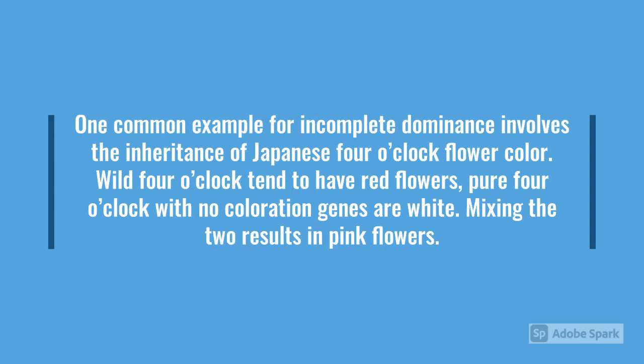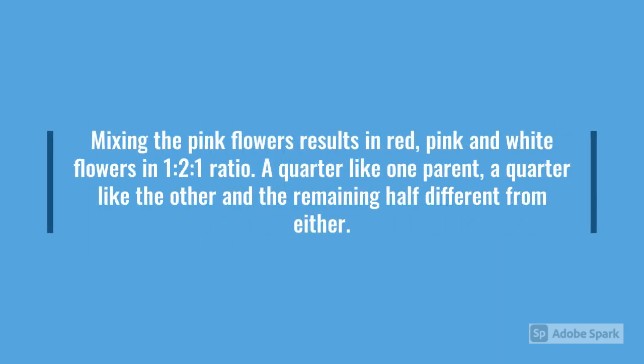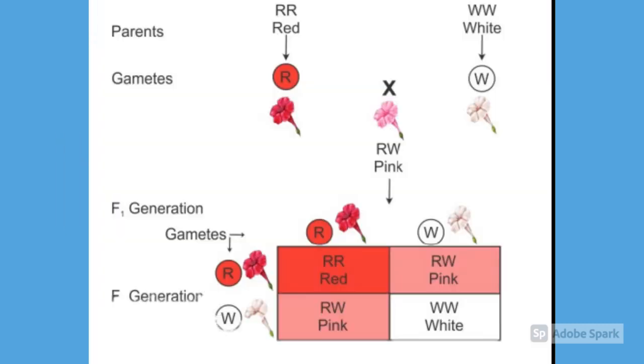One common example of incomplete dominance involves the inheritance of Japanese 4 o'clock flower color. Wild type flowers tend to have red flowers, while pure flowers with no coloration genes are white. Mixing the two results in pink flowers. Mixing the pink flowers results in red, pink, and white flowers in a 1:2:1 ratio. This figure shows the P and F1 colorations of Japanese 4 o'clock flowers.